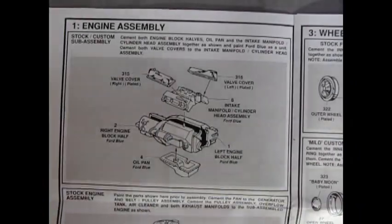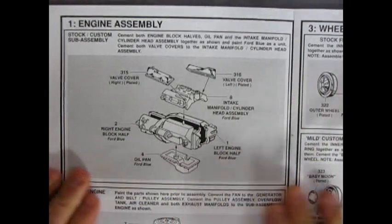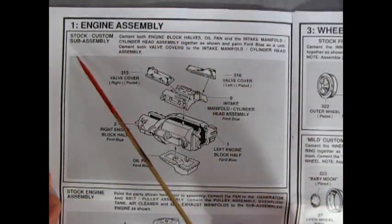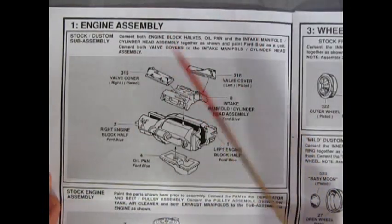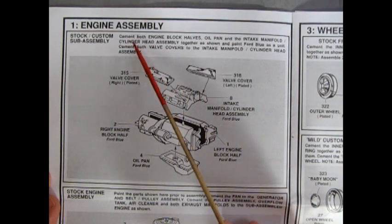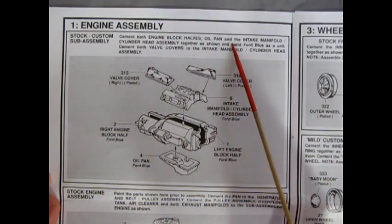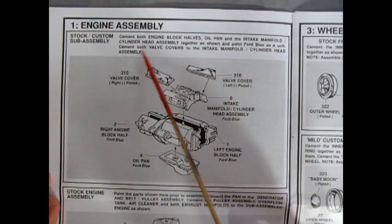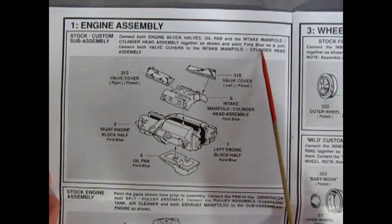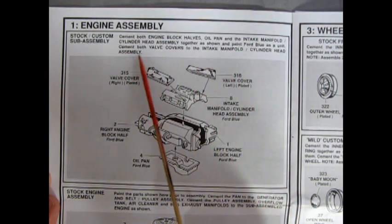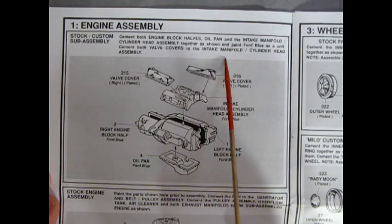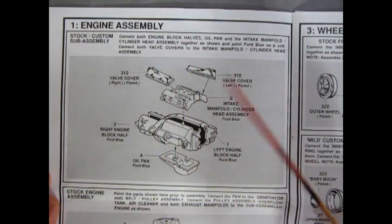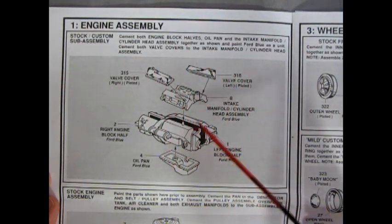Which of course shows our engine assembly. It says a stock and custom sub-assembly. Cement both engine block halves, oil pan, and the intake manifold cylinder head assembly together as shown in paint Ford Blue as a unit. Cement both valve covers to the intake manifold cylinder head assembly. So here of course you see we get our left and right hand sides of the engine block half.